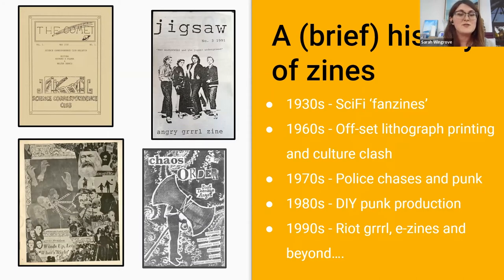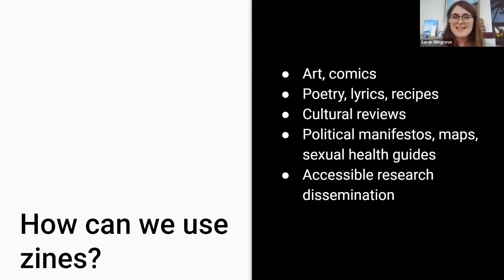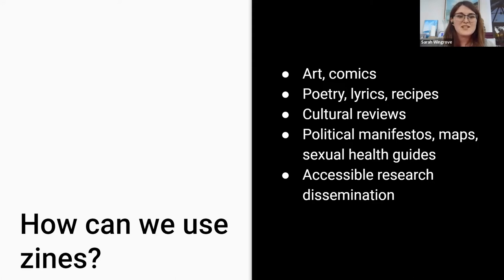At a time when academic publication is quantifiably impactful, with analytics to demonstrate reach and therefore value, zines help us situate ourselves in a radical tradition instead. So with this we've started to suggest how zines can be used — discussing their history and how their uses have changed over the last hundred years. As we approach making our own, here are some specific ways that people have used zines: to disseminate new art and comics, poetry, lyrics and recipes, reviews for new films, for gigs, political manifestos, maps, sexual health guides, and so much more. What I think is really relevant to us at this conference particularly is that they're an opportunity to share research in accessible ways. I started making a zine from a paper I gave at the Analista for Society conference back in April — to share my ideas in a creative way, under my control, and that would continue to be open access.